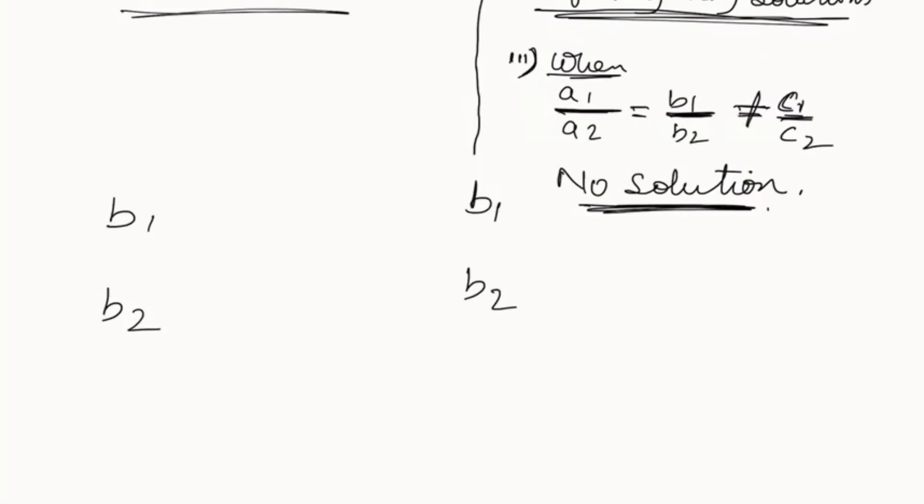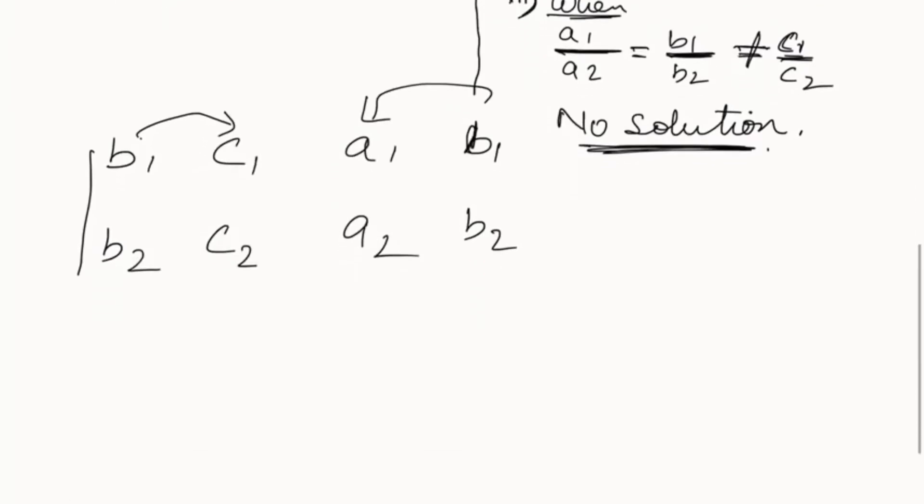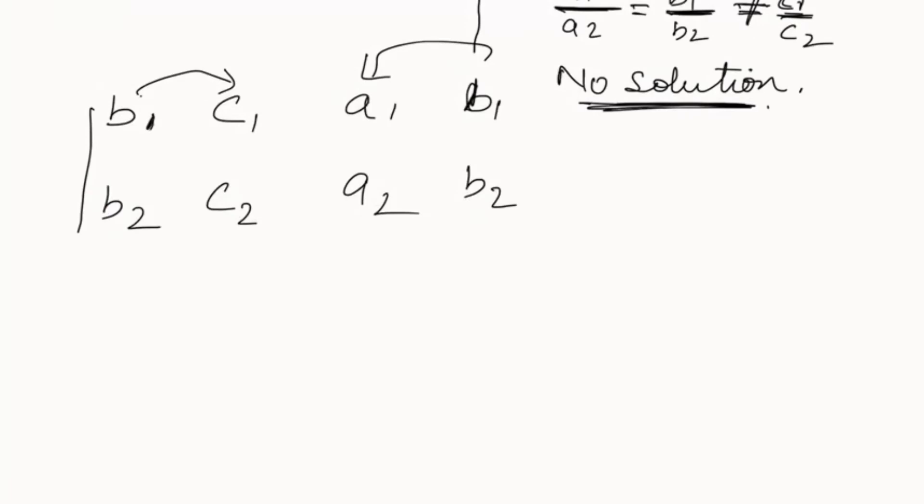Now this b1 by b2 here, then it will be followed by c1, c2. Then next, before b1, b2, we write a1, a2. So we write these variables in this order.